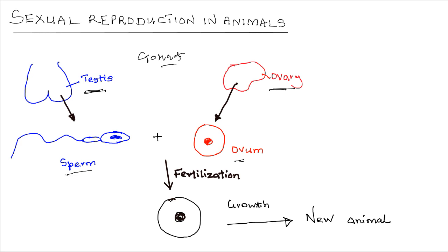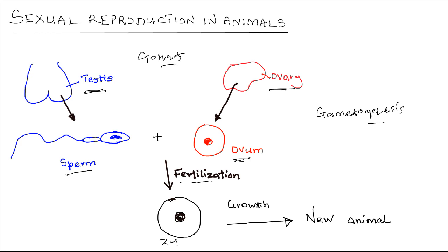The process of gamete formation in both the testis and the ovary is known as gametogenesis. Through gametogenesis, sperms are produced in the testis while the ova are produced in the ovary. The male and female gametes fuse during fertilization to produce the diploid zygote. Remember, the ovum and the sperm are haploid, so when they come together during fertilization they form the diploid zygote.